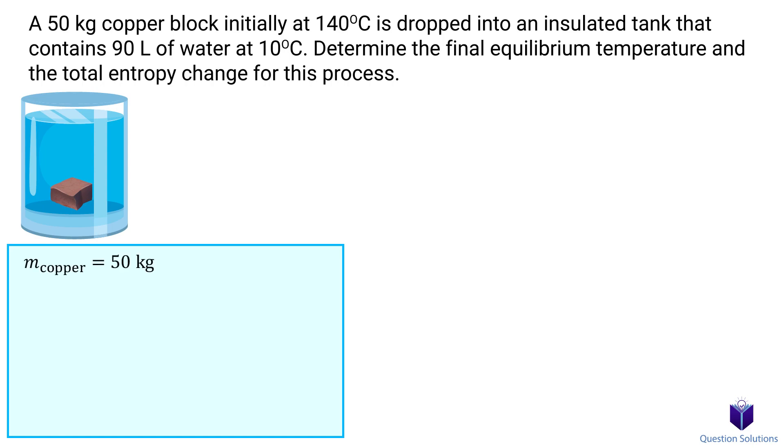Let's start by writing down what we know. The mass of the copper block is 50 kilograms and it's at 140 degrees Celsius. The insulated tank contains 90 liters of water, which means the volume is 0.09 cubic meters. The temperature of the water is 10 degrees Celsius.